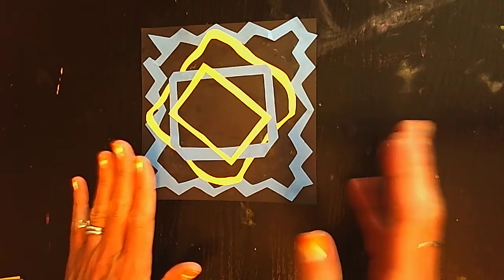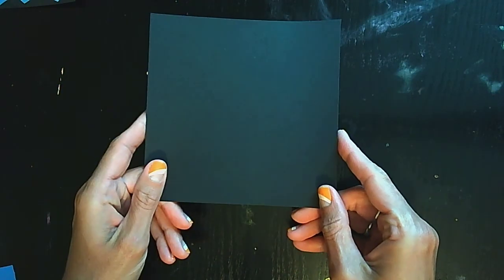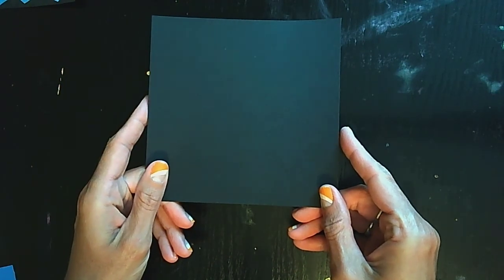Now what we're gonna need is a whole bunch of different supplies. First we're gonna need a black piece of paper. It could be any size. We're working right here with a 6 by 6 inch piece of black paper, or it could be a dark colored paper, doesn't matter.